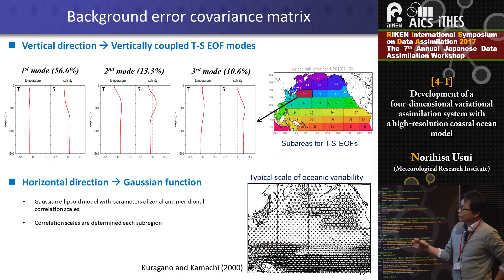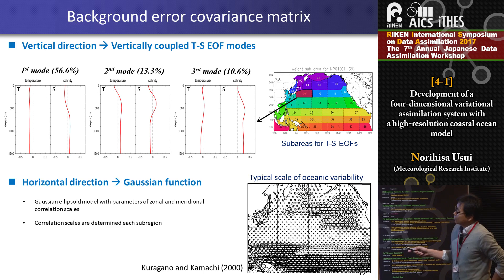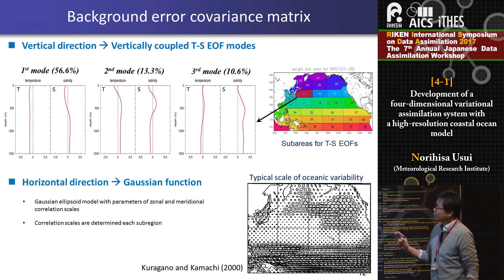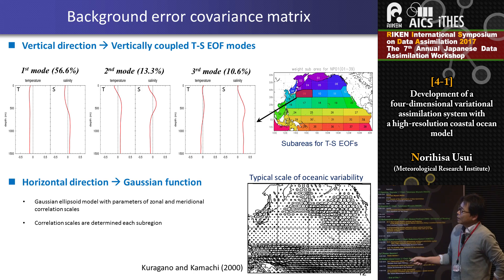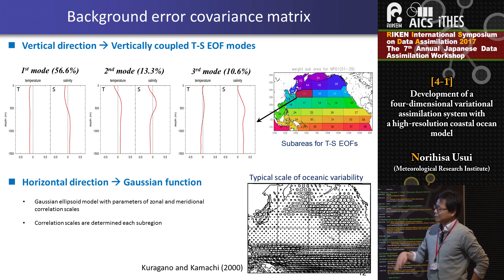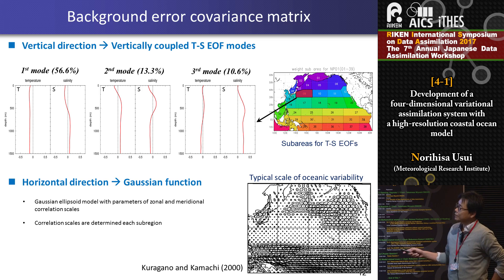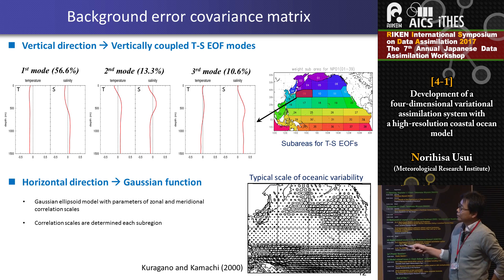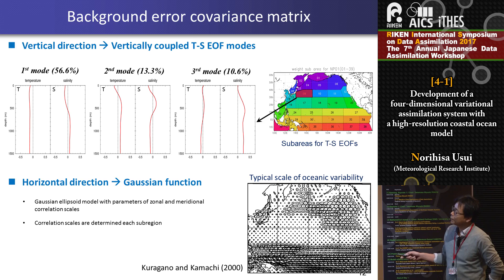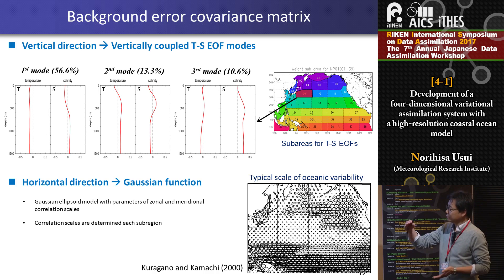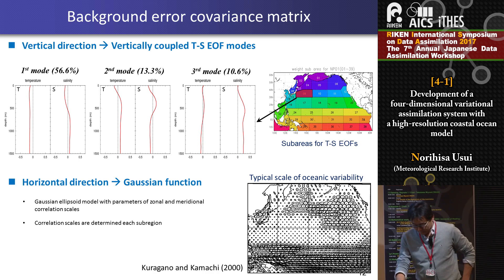This is an example of the vertically coupled temperature-salinity EOF modes calculated for this area. We divided the model domain into sub-regions, and for each sub-region we calculate this kind of vertical mode. The dominant mode can be understood as the dominant leading dynamical mode, such as the first and second baroclinic modes. So in our system, in the vertical direction, the background error covariance matrix is modeled by the vertically coupled temperature-salinity EOF modes. In the horizontal direction, the background error covariance matrix is modeled by a simple Gaussian function, with zonal and meridional correlation scales based on previous observation studies. This is our 3D-var analysis scheme.